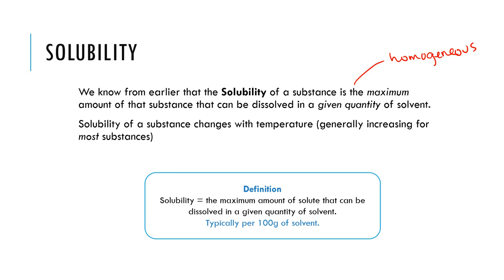So our definition is that solubility is the maximum amount of solute that can be dissolved in a given quantity of solvent. Typically in chemistry, and in this chapter, we talk about 100 grams of solvent when discussing solubility.